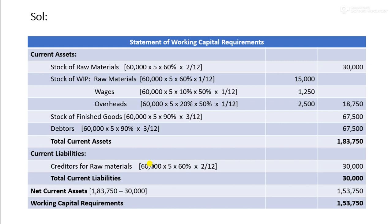Creditors are the supplier of raw materials. The calculation is: 60,000 into 5 into 60% into 2 by 12, giving 30,000. Total current liabilities amount to 30,000. The net current asset is 1,05,750, and after adding a provision for contingencies, the working capital requirement is determined.